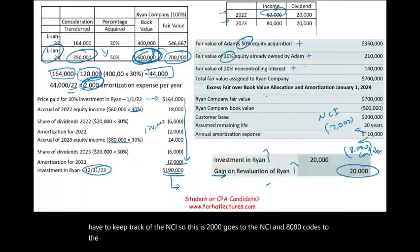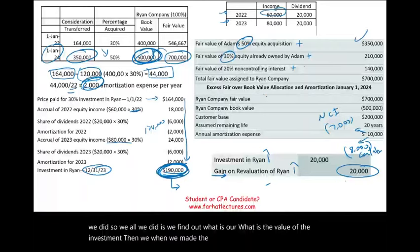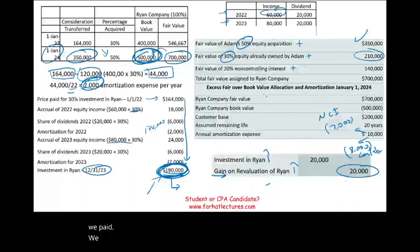So to summarize: we found the value of the investment at year-end, then when we made the new purchase we revalued the old investment from $190,000 on the books to $210,000 based on what we paid. We had a gain of $20,000 and then kept going.